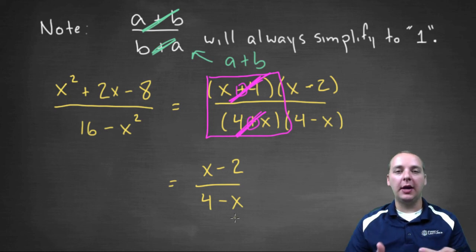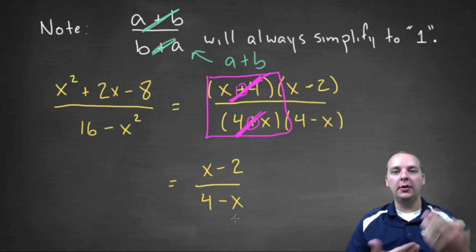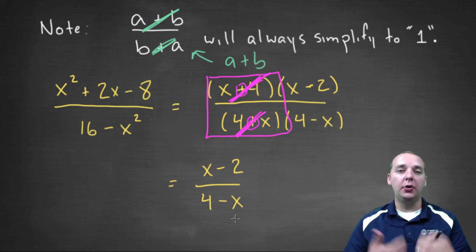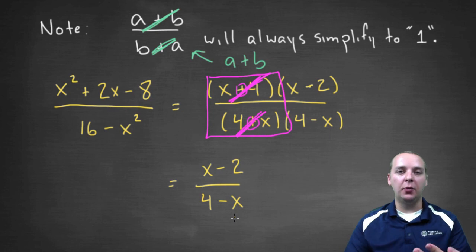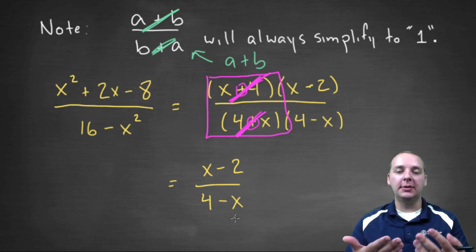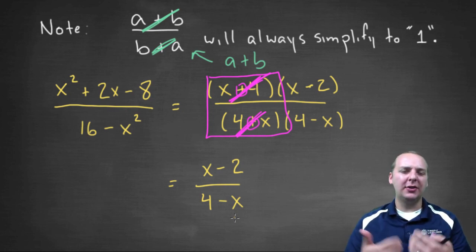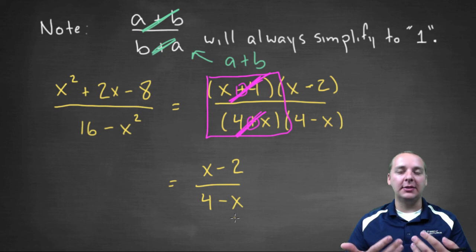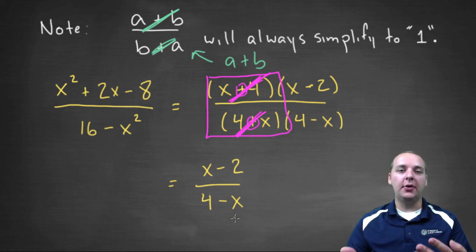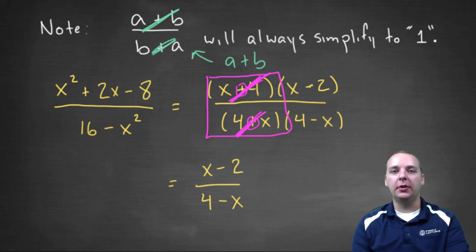Just remember: if you have opposites in the numerator and denominator, you can cancel them and leave a negative one. But if it's a plus b over b plus a, those aren't exactly opposites — those are in fact the same thing. They'll cancel and leave you with a positive one.